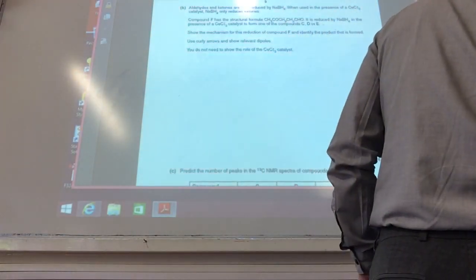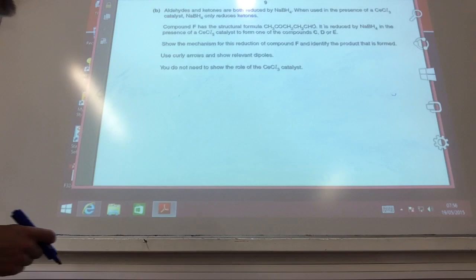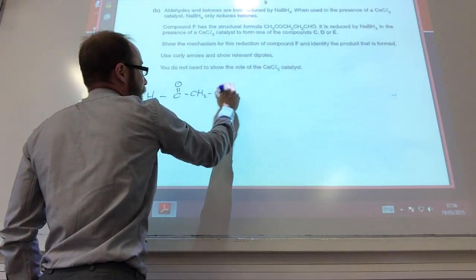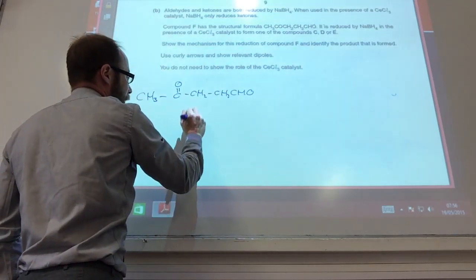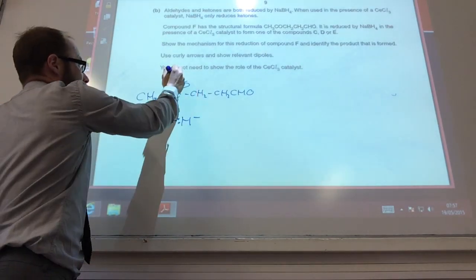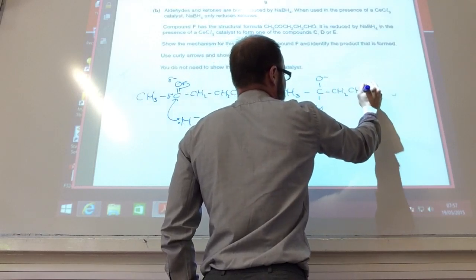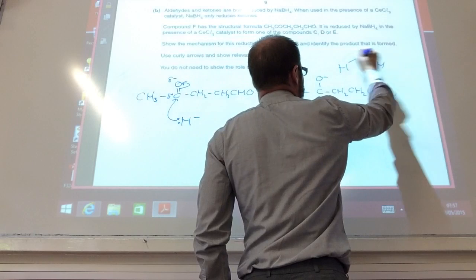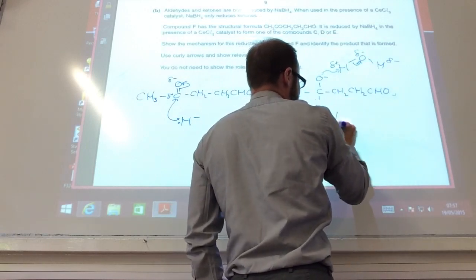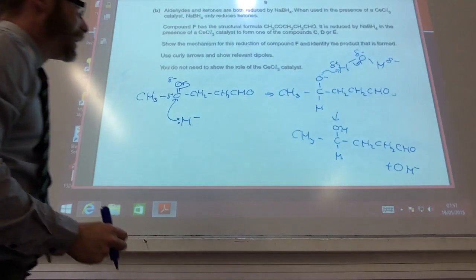Okay, so the next one they want is a mechanism using sodium borohydride in the presence of CeCl3, only reducing ketones. Starting with compound F: CH3, C double bond O, CH2, CH2, CHO. I've got my hydride here that is going to attack my delta-plus carbon, which goes there. That goes to the oxygen, which is delta-minus. That gives me my intermediate. And it picks up a hydrogen from water to give me my final compound, plus OH- from where we picked up a hydrogen from the water.